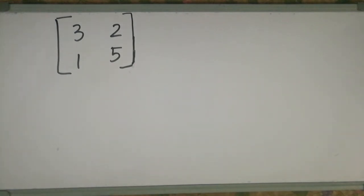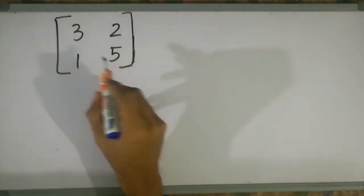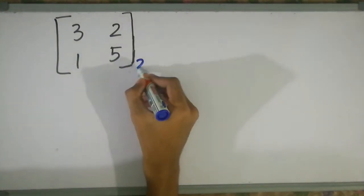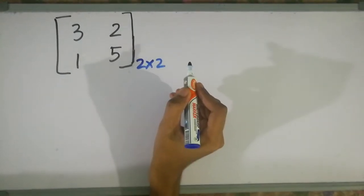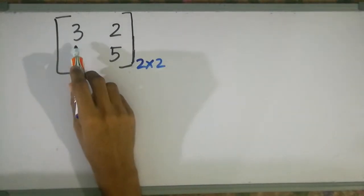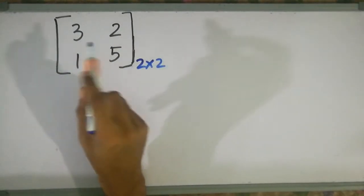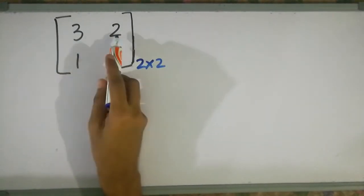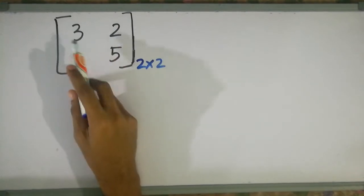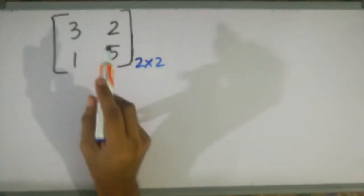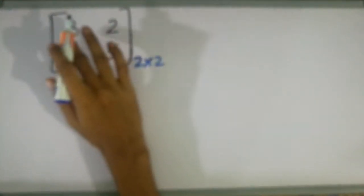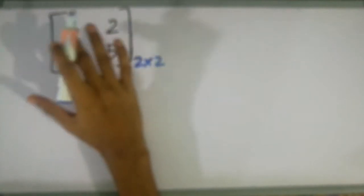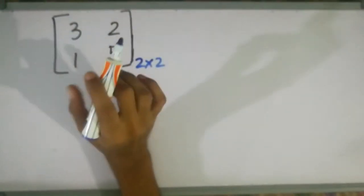Hi everyone! Today we have a 2x2 matrix. A 2x2 matrix has 2 rows and 2 columns, that is 2 elements and 2 elements.